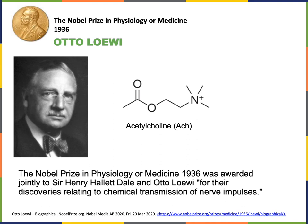Otto Loewi was awarded the Nobel Prize in Physiology or Medicine in 1936 for his discovery of the neurotransmitter acetylcholine. His research was investigating the effects of the vagus nerve, the 10th cranial nerve, on the heart rate. The vagus nerve carries the pre-ganglionic parasympathetic efferent fibers that regulate the heart.